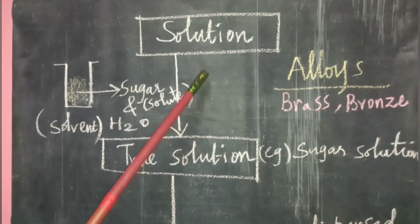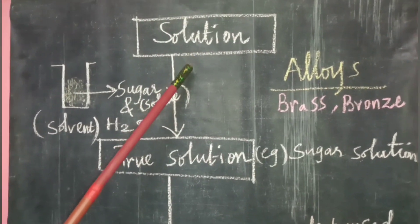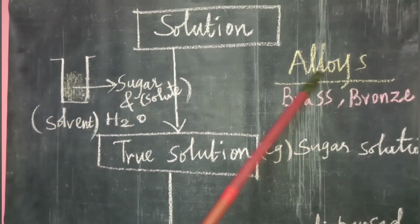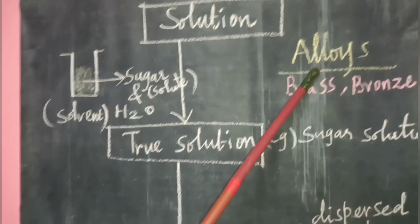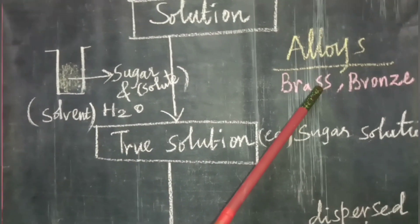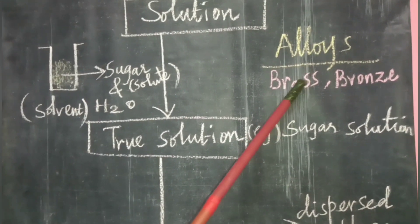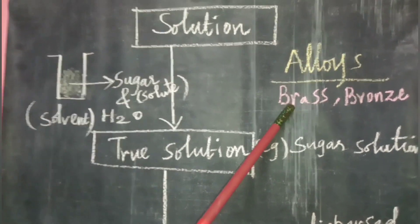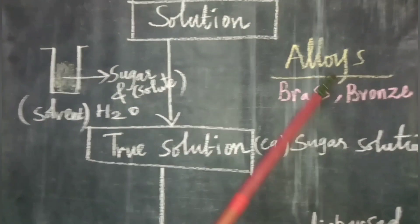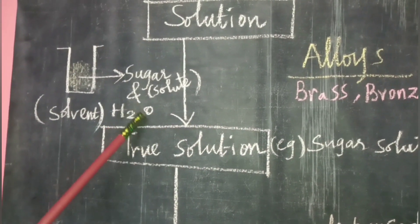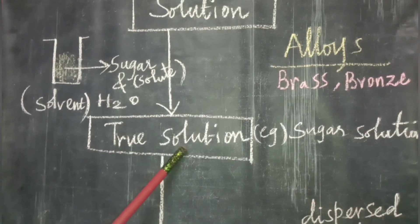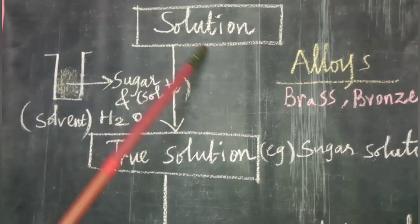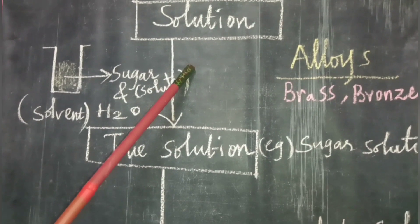An alloy is a homogeneous mixture of two or more metals, or metals with nonmetals, combined together. Examples include brass and bronze. Now, regarding solutions: the component present in lesser amount by weight is called the solute.